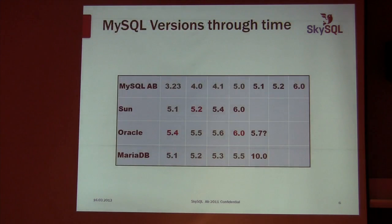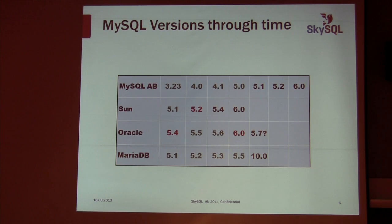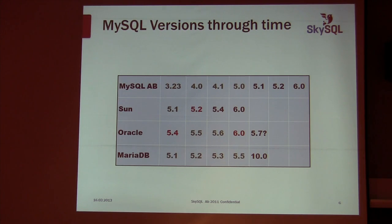MariaDB started as a fork of MySQL 5.1, which was the last release under Sun before Oracle acquired them. Because MySQL traditionally had really long development cycles and MariaDB wanted to get features out more often, they added additional releases — Maria 5.2 and 5.3 — still based on 5.1 but with multiple releases. Then Oracle released MySQL 5.5, so MariaDB merged their features from 5.3 with MySQL 5.5 to create Maria 5.5. Maria 5.5 is essentially MySQL 5.5 plus all the MariaDB features.